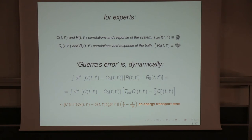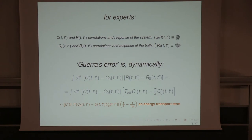For experts: if C and R are the correlation and response of the system, and the effective temperature is defined accordingly because we are out of equilibrium — using Guerra's notation more or less — C0 and R0 are those of the bath, which defines the axis. Guerra's error, the famous term that is squared and hence positive, in dynamics becomes this object. If you are doing it in a simulation with a multi-bath, this is what you have to measure to get Guerra's term. And when you look at it, it is exactly a form of heat transport term — the response of system one times the correlation of two, and the response of two times the correlation of one. Such is the form of heat transport terms.